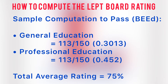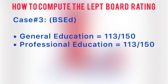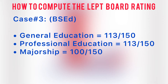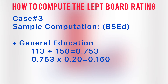On the other hand, for a BS ed taker who got a score of: general education — 113 out of 150, professional education — 113 out of 150, and majorship — 100 out of 150. The computation will be as follows. For general education: 113 divided by 150 equals 0.753 times 0.20 equals 0.150.